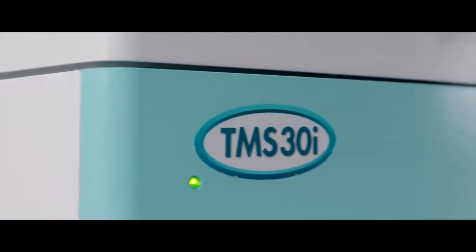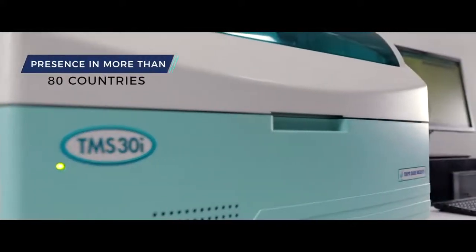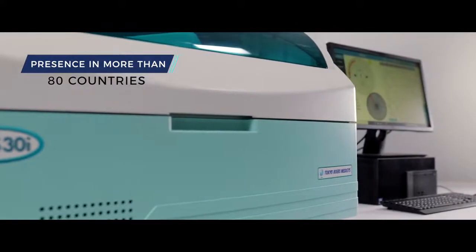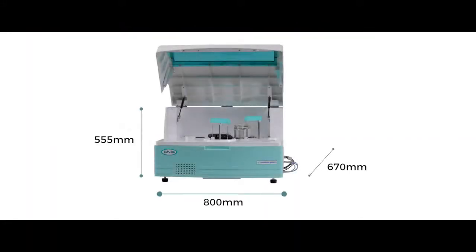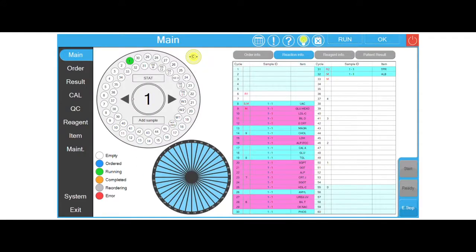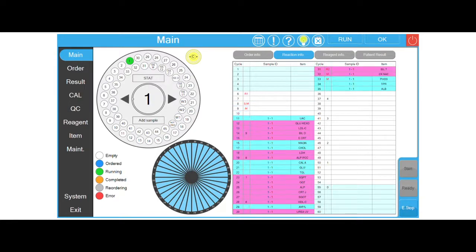TMS-30i, a fully automated biochemistry analyzer, the one and only perfectly designed diagnostic tool for speeding up clinical laboratories. This model primarily solves space constraints for any laboratory. TMS-30i offers constant 270 tests per hour for photometric throughput.